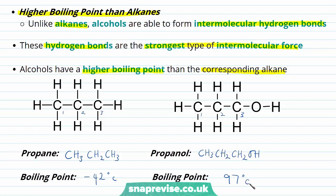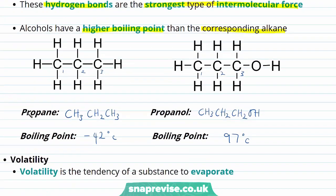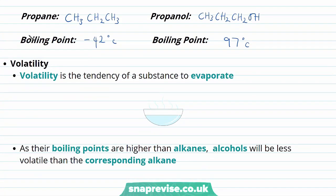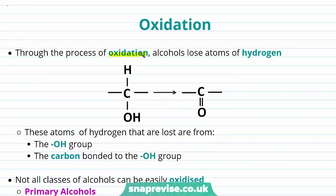We can see that the comparative alkane has a much lower boiling point. Secondly, if we compare the volatility — the volatility is a tendency of a substance to evaporate — as their boiling points are higher than the comparative alkanes, the alcohols are less volatile than the corresponding alkane; they are less likely to evaporate. Through the process of oxidation, our alcohol molecules lose atoms of hydrogen. These atoms of hydrogen are lost from the hydroxyl group and the carbon that's bonded to our hydroxyl group.